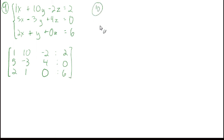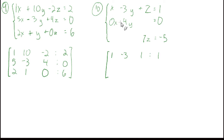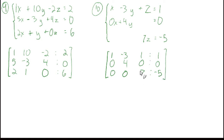Let's do number 10 as well — it has more blank spaces to fill in. The coefficient of x is 1, then negative 3, and 1 for z, a colon, and 1 on the other side. There are 0 x's in the next equation, so we put a coefficient of 0, and 4 here, also a 0, and 0. Fill those with 0's, then 7 and negative 5. There's our augmented matrix for number 10.